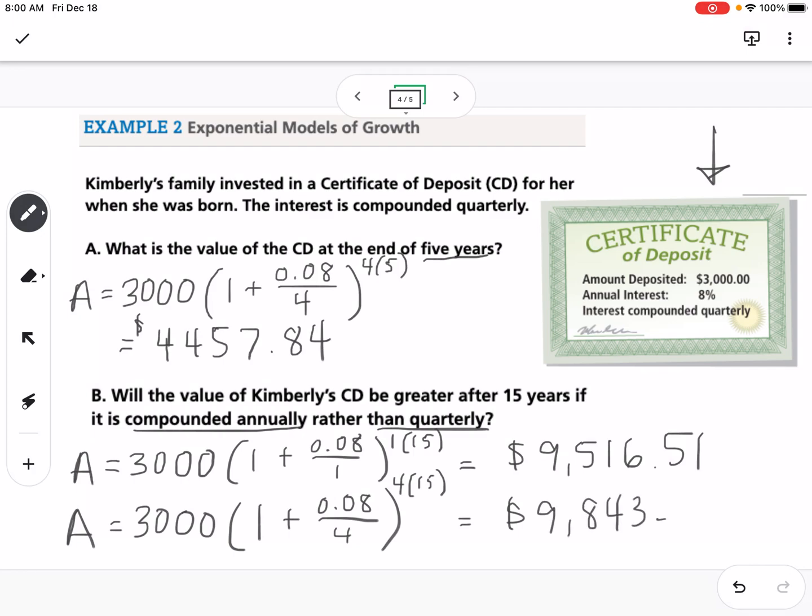So what you will notice is that quarterly gave her more money than annually. So with compounding, the more often you compound in a year, the more calculations the money is going through, and the more money you're going to get back. So compounding quarterly is going to be more than annually. Compounding monthly would get you even more money than quarterly.